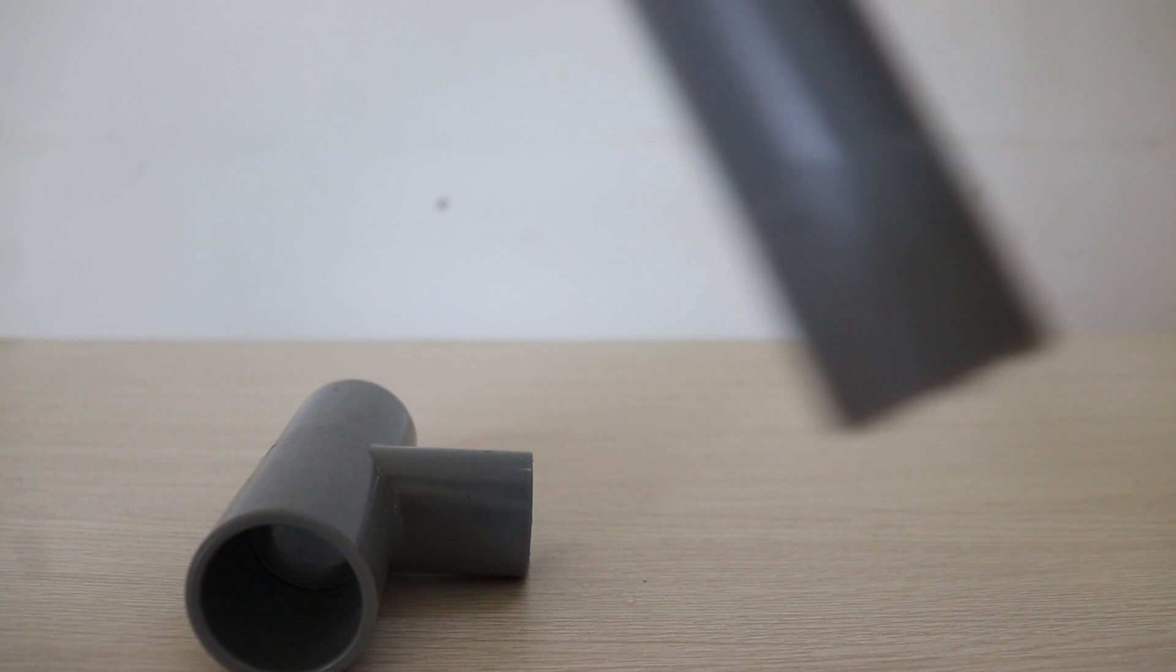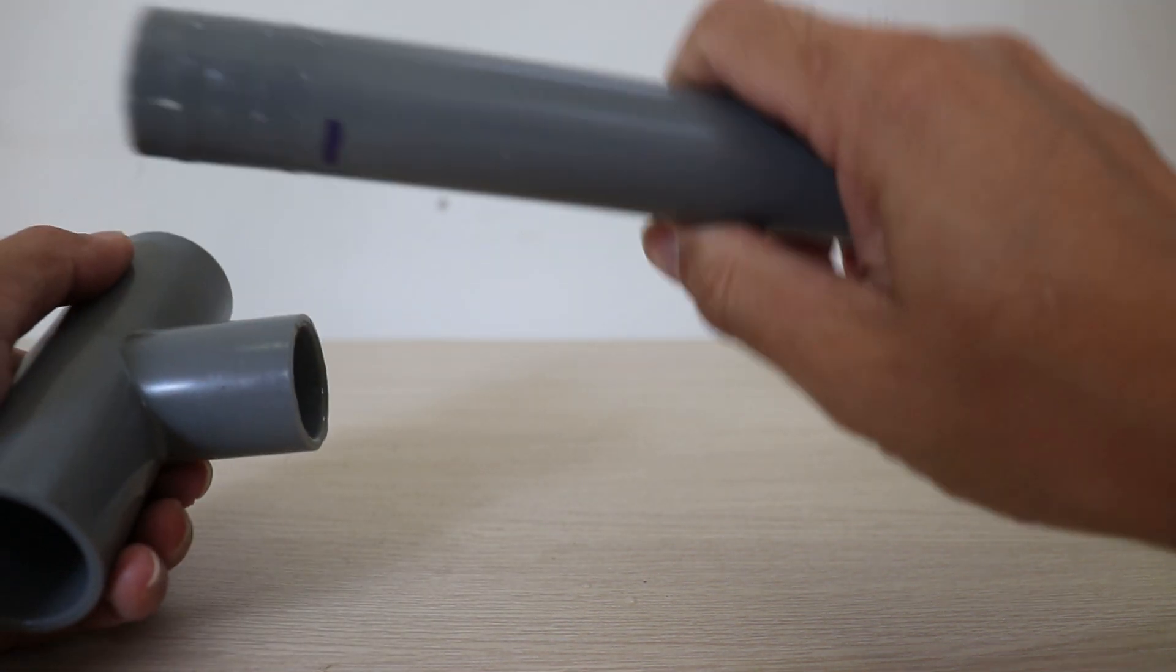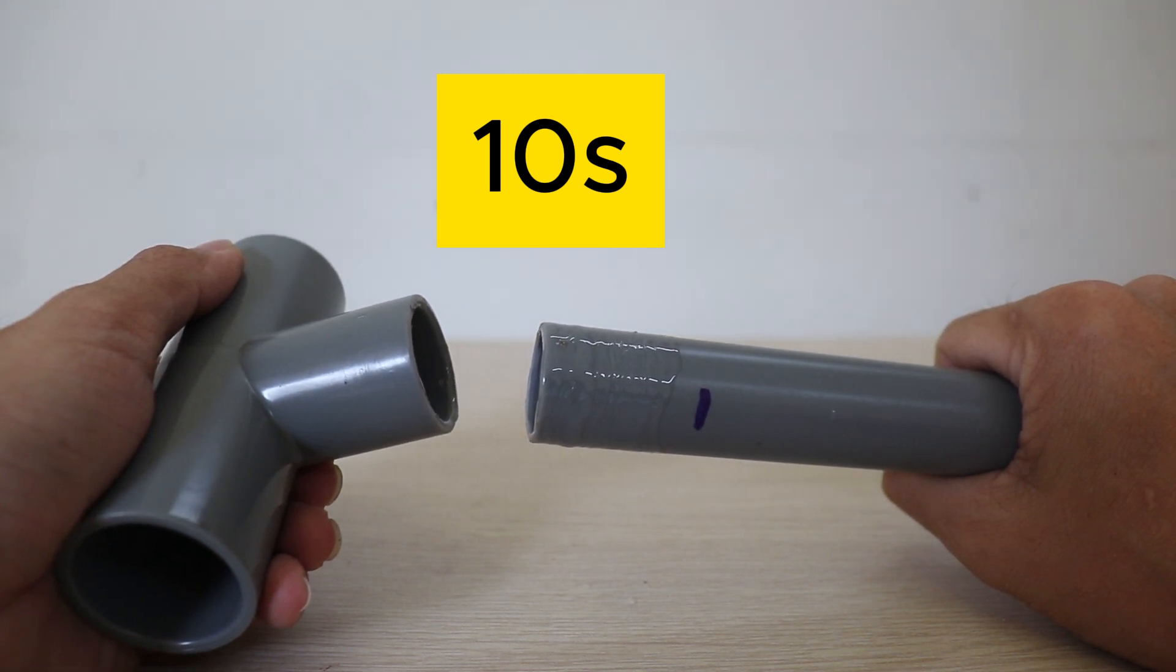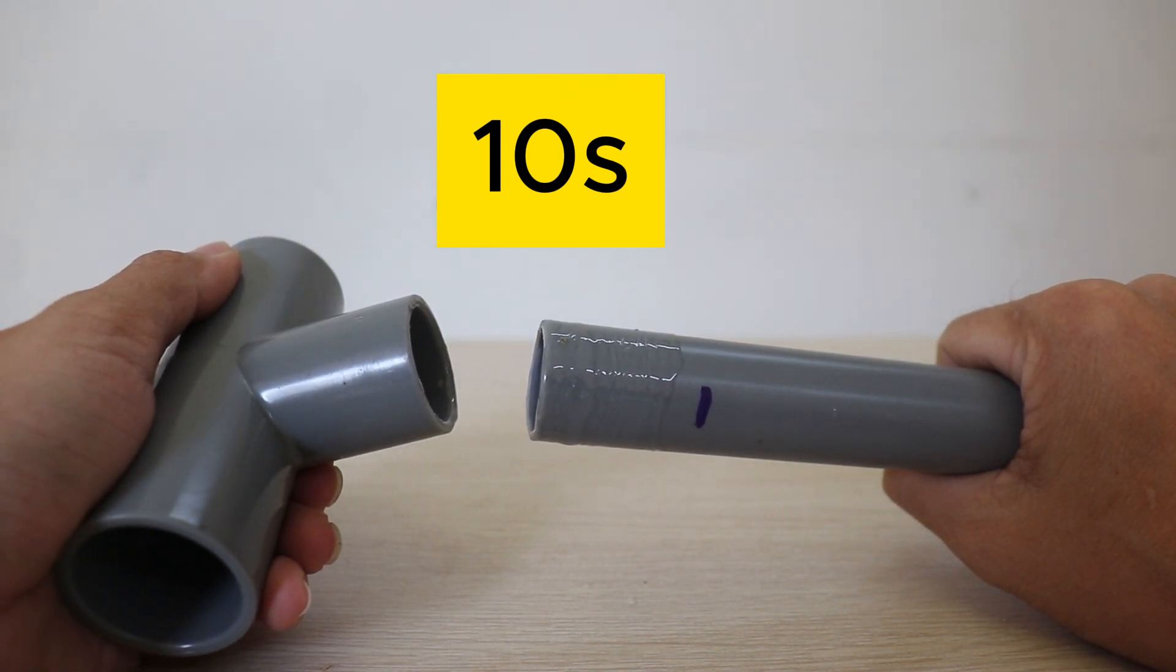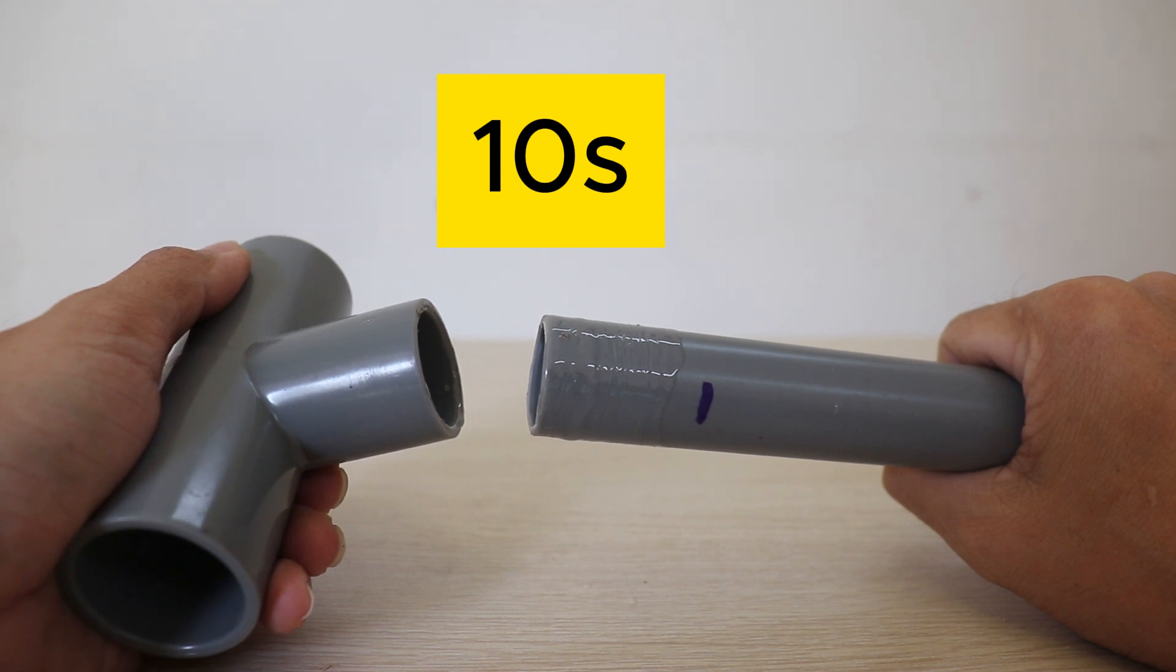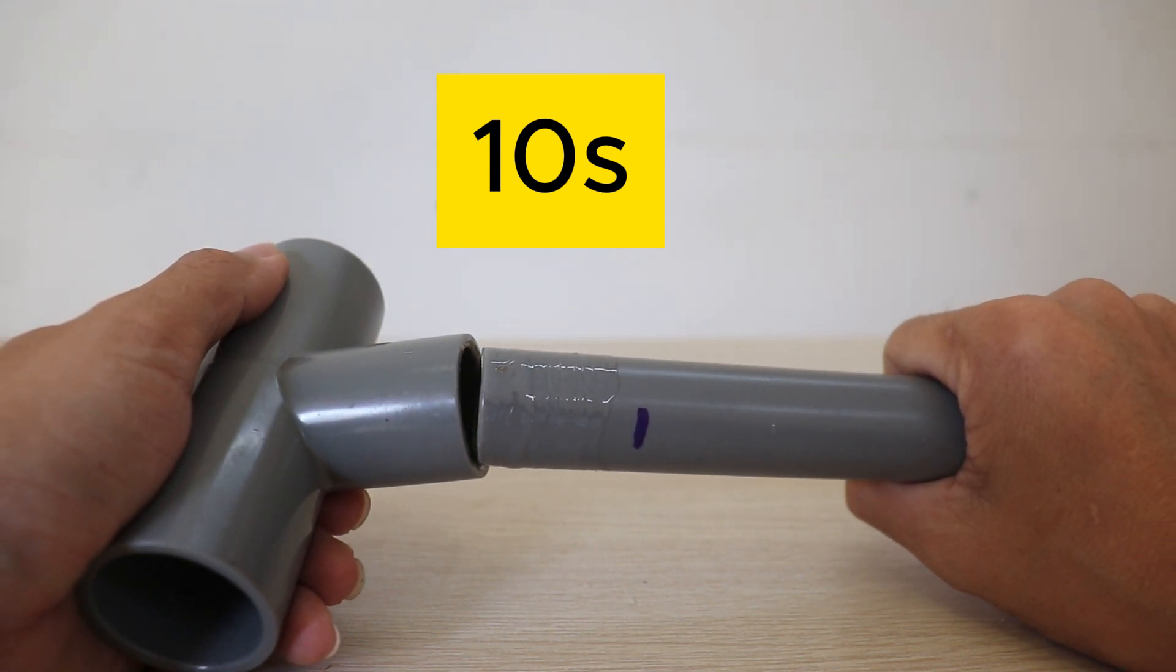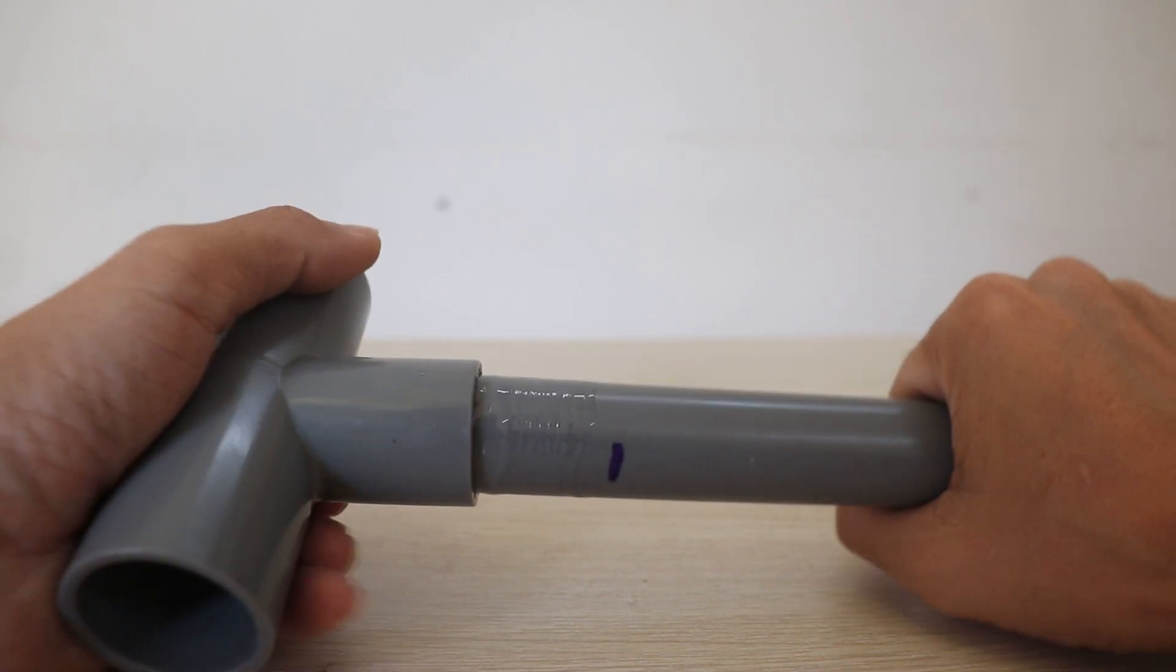Third, wait 10 seconds after applying the glue before continuing to bond. You should not bond immediately after applying glue to the PVC pipe surface because at this time the glue has not completely melted the PVC pipe surface. Stick the pipe after 10 to 20 seconds for the best connection.